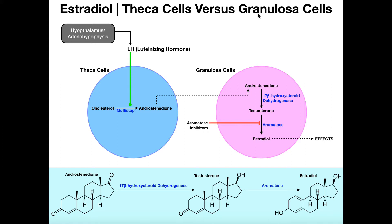In a previous video in the endocrine system playlist, I mentioned that it was actually the theca cells that are generating estradiol. That's more of a gross simplification of what's actually happening. It turns out the theca cells do most of the work for generating estradiol, but they don't actually do the final couple of steps. They leave out the last two steps and allow the granulosa cells to complete them. It's actually the granulosa cells that are going to make and release the estradiol, but the granulosa cells will be unable to do so without the functioning of the theca cells.